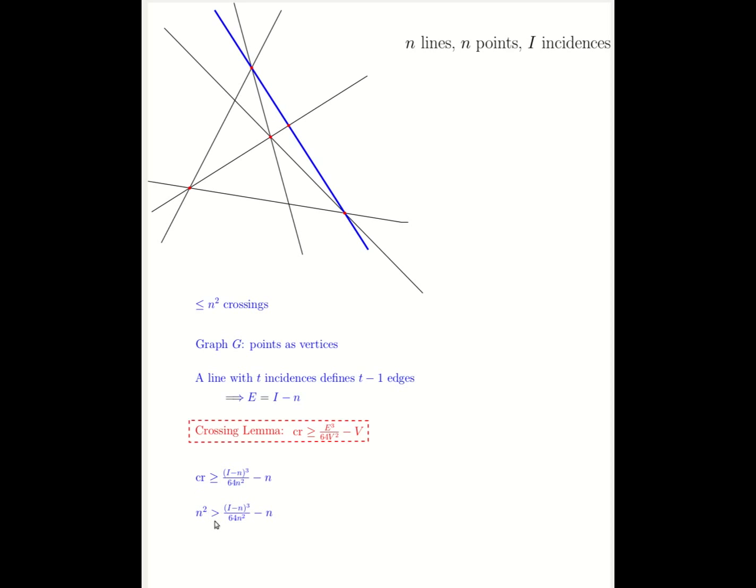This means the number of crossings is upper bounded by n squared, and thus we must have n squared bigger than this value here. If we simplify this, we get that the number of incidences will be bounded by n to the 4 thirds plus n, which proves the Szemeredi-Trotter theorem in the special case when n lines and n points are present.